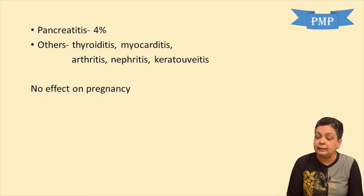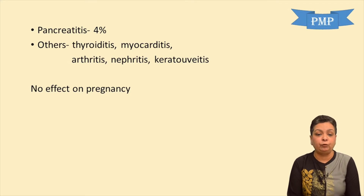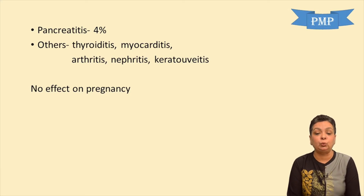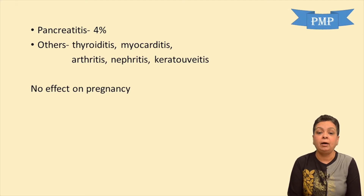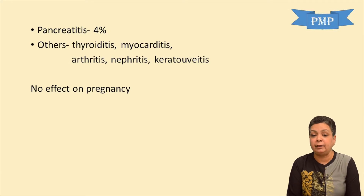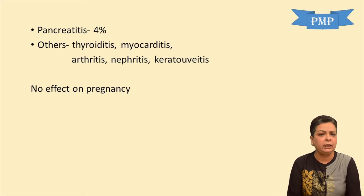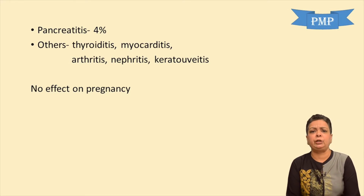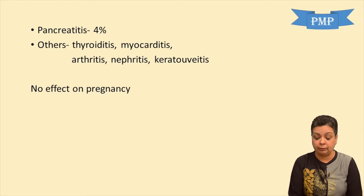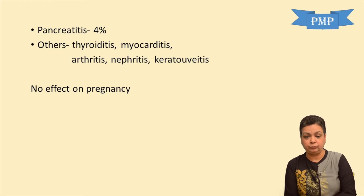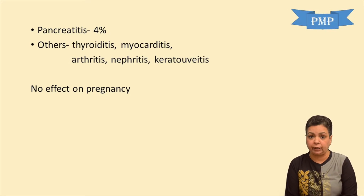Pancreatitis is seen as a complication in about 4%. Other complications include thyroiditis, myocarditis, arthritis, nephritis, and keratouveitis. There is no effect seen on pregnancy — if mumps occurs in pregnancy, it does not lead to spontaneous abortions, and it is not teratogenic.